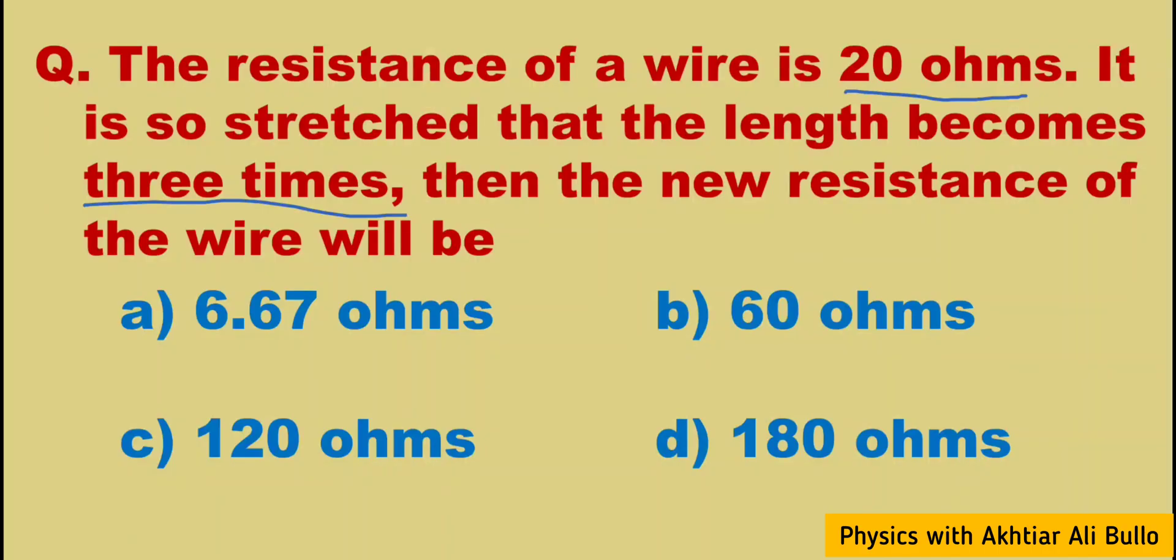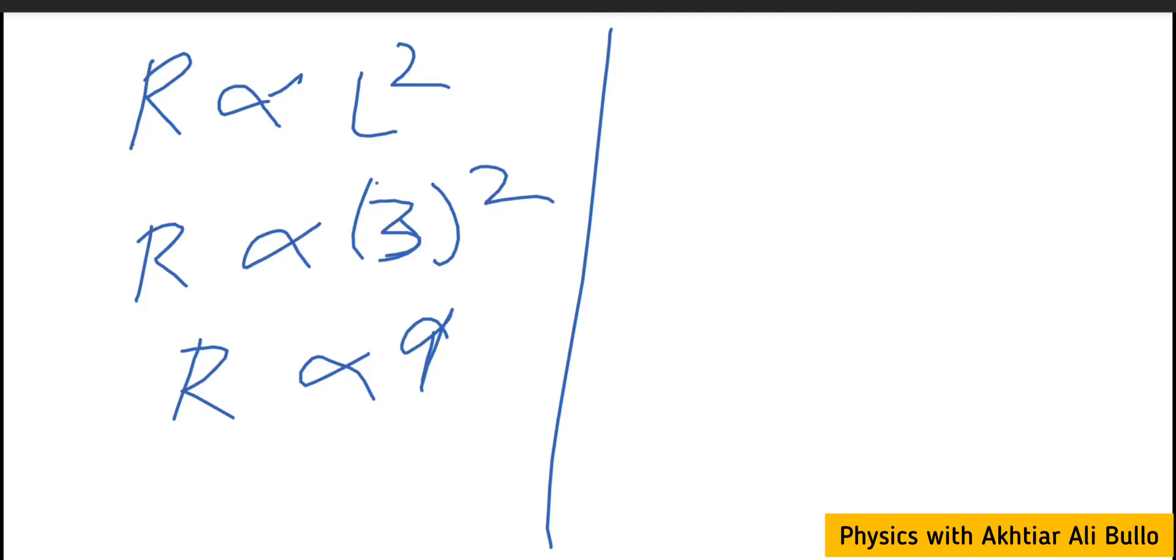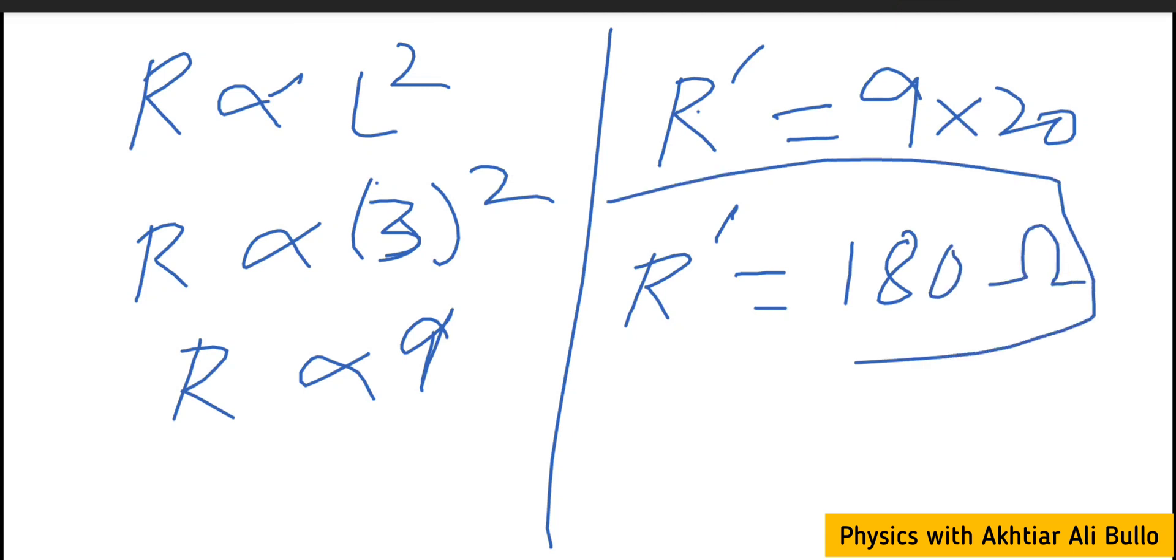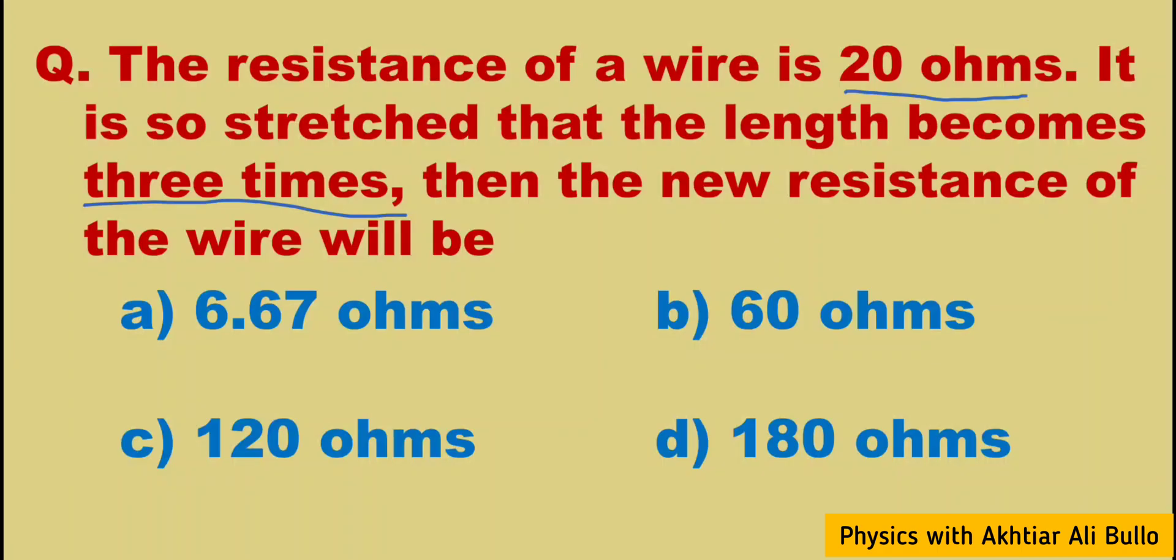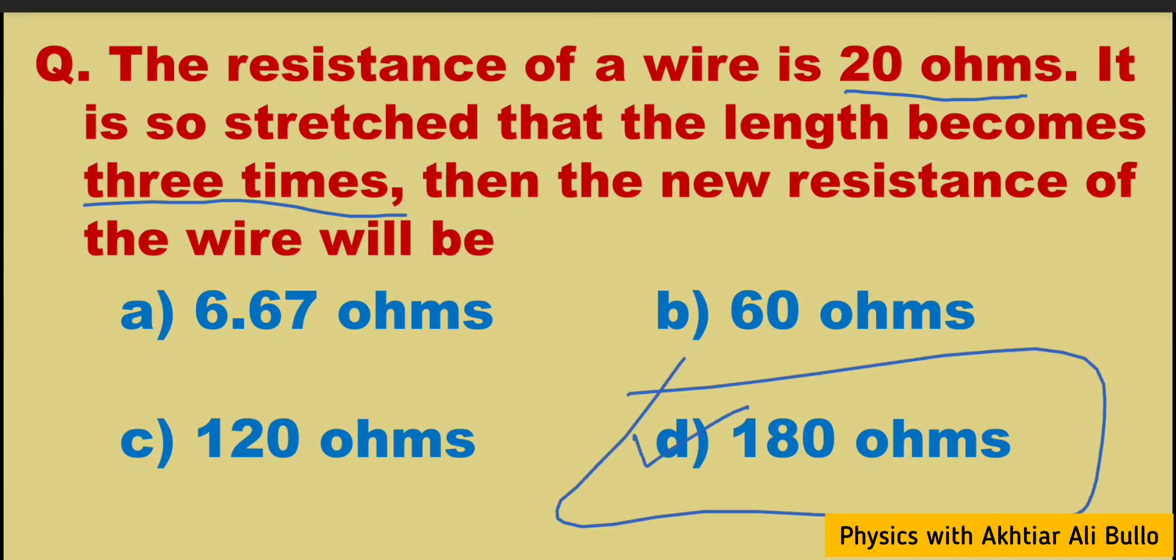So the 20 ohms resistance is given. R dash, the new resistance of the wire, will be equal to 9 into 20. So 9 into 20 will be 180 ohms. So the correct option is D, 180 ohms. Thank you.